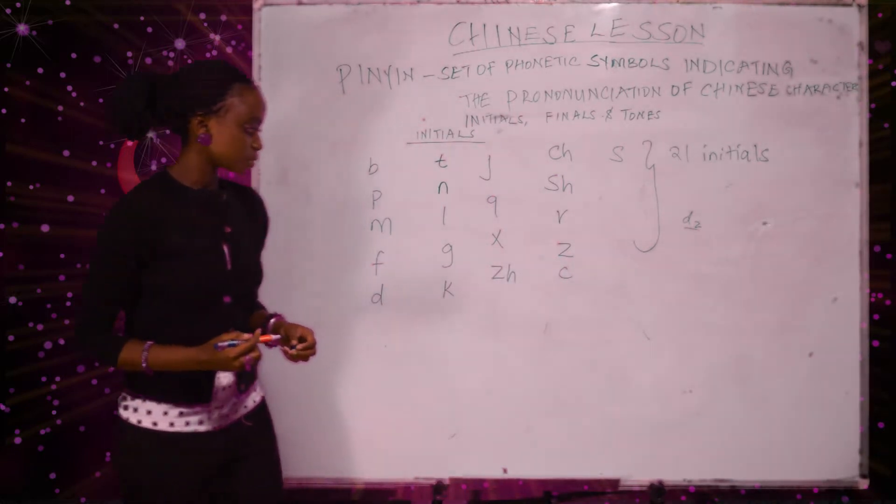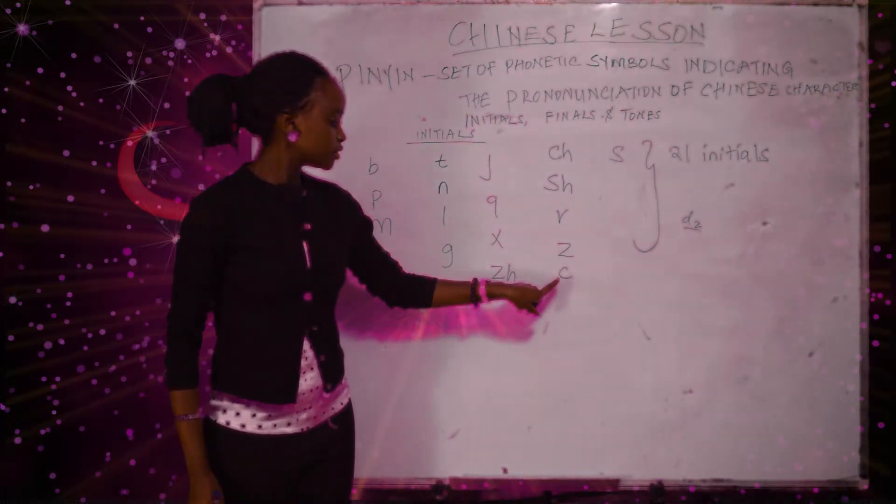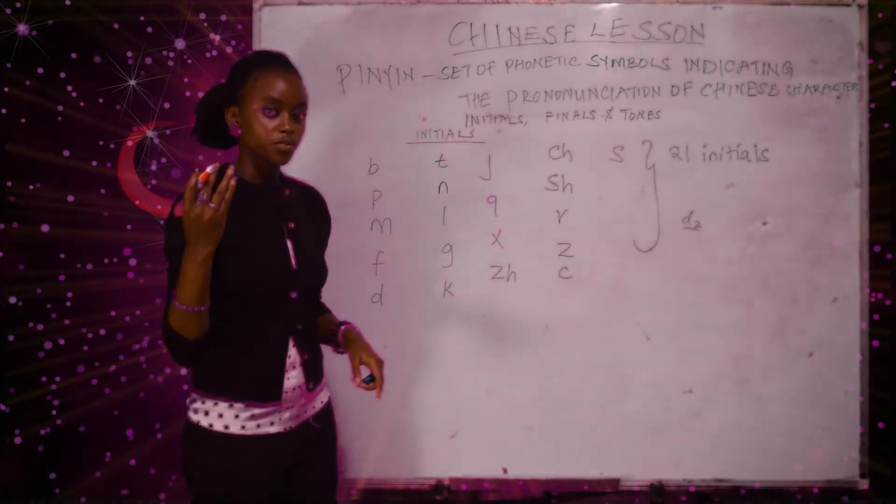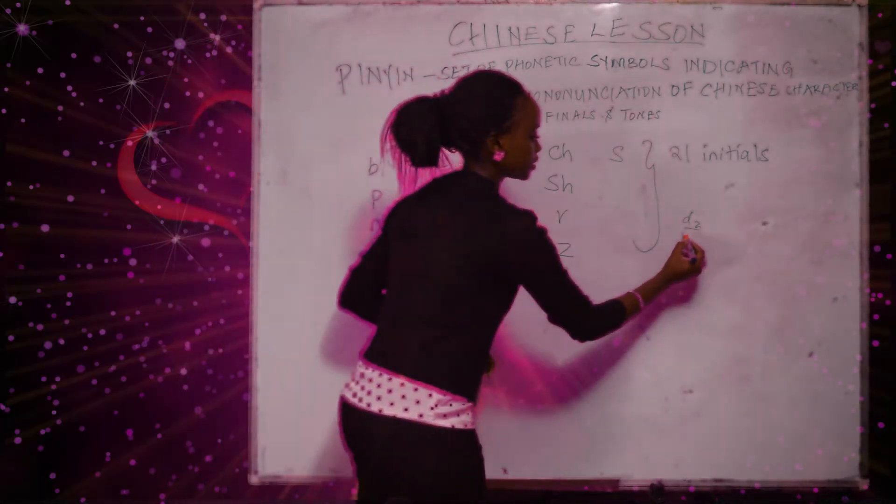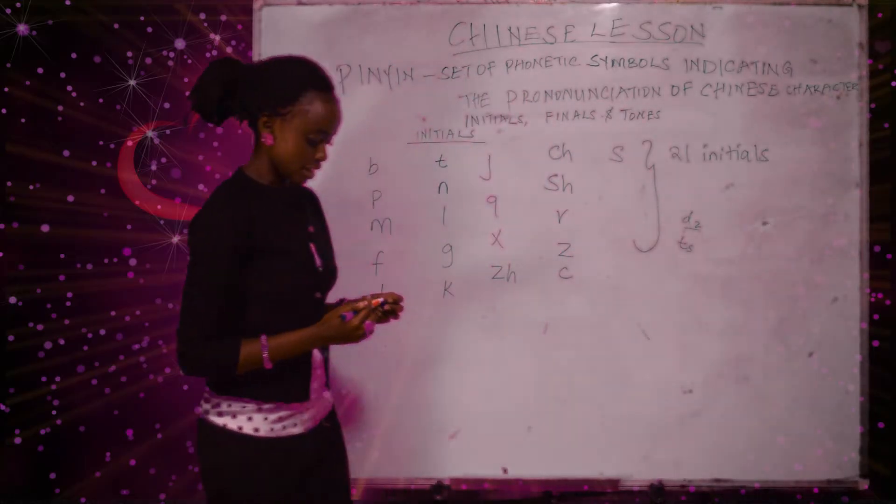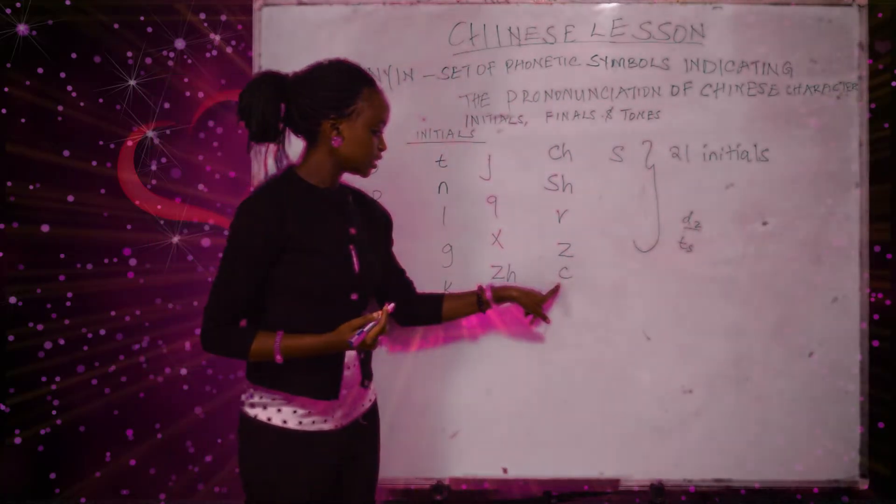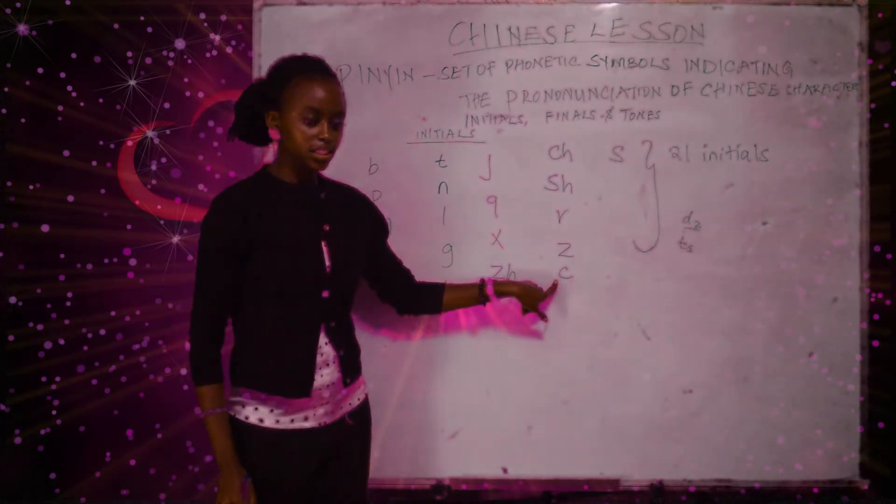The next one we have the C, which is ts, ts. Also, if you can hear me well when I'm pronouncing the C, you can hear a bit of T and S. Yeah, so that's how you pronounce the C. You pronounce it as ts, ts.